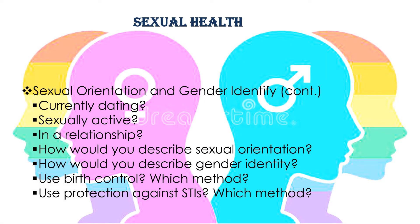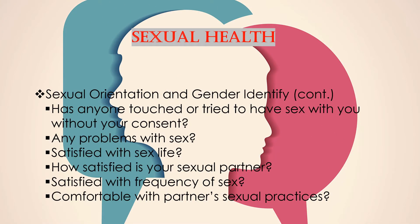Sample questions for sexual orientation and gender identity assessment include: Are you currently dating? Are you sexually active, or are you in a relationship? How would you describe your sexual orientation and gender identity? Do you use birth control — which method? Do you use protection against STIs — which method? Has anyone touched or tried to have sex with you without your consent? Are you satisfied with your sex life, and are you comfortable with your partner's sexual practices?